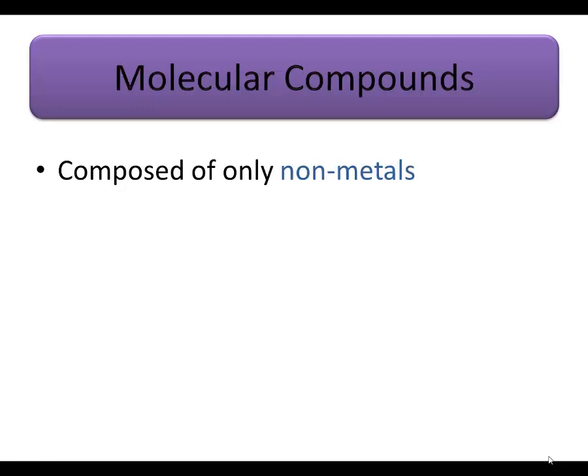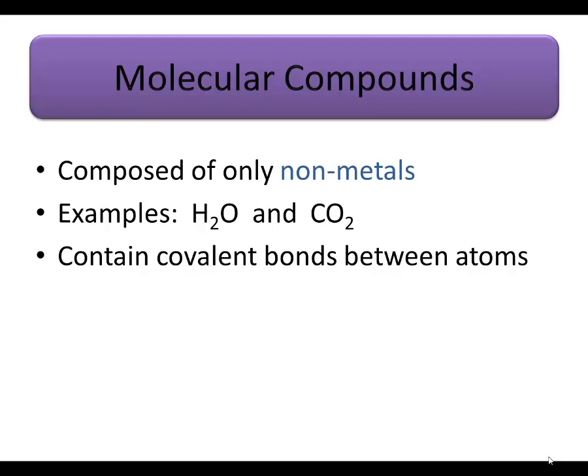Molecular compounds are different from ionic compounds in that molecular compounds consist of only non-metal atoms. Two examples of molecular compounds are water, H2O, and carbon dioxide, CO2. The atoms in molecular compounds are held together with covalent bonds, not ionic bonds.